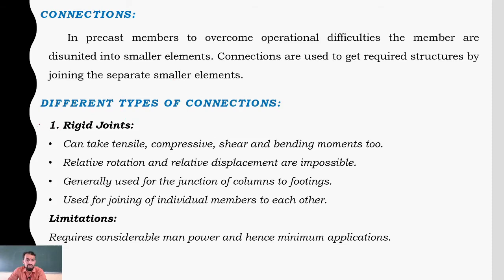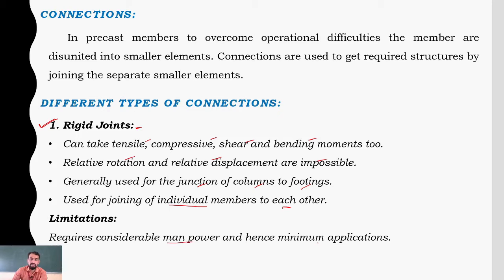The different types of connections: first is the rigid joint. A rigid joint can take tensile, compressive, shear, and bending moment forces; relative rotation and relative displacement are impossible. They are generally used for junction of columns and footings, and for joining individual members to each other. Once fixed, a rigid joint cannot be dismantled without breaking instruments. Its limitation is that it requires considerable manpower and hence has minimum application.